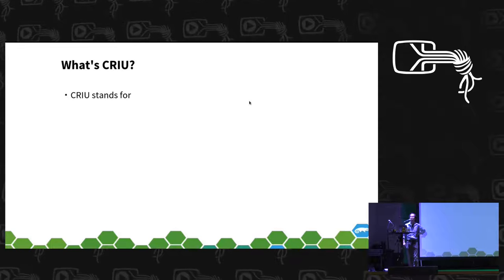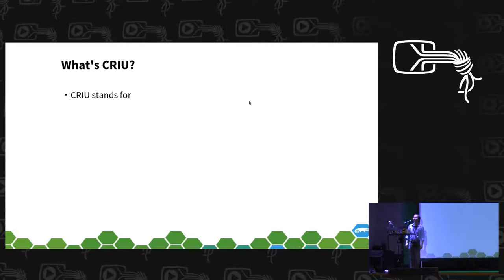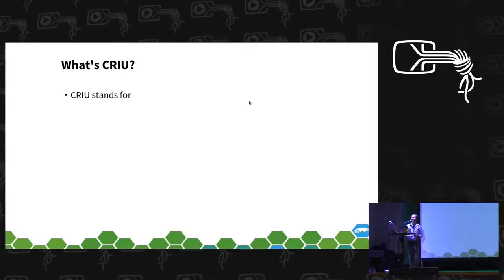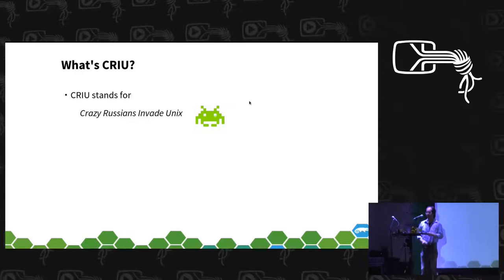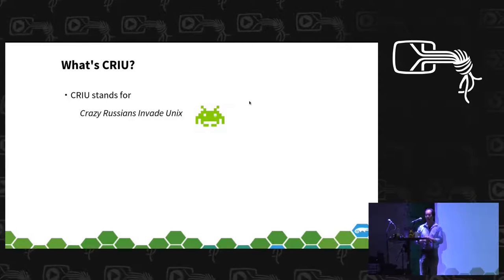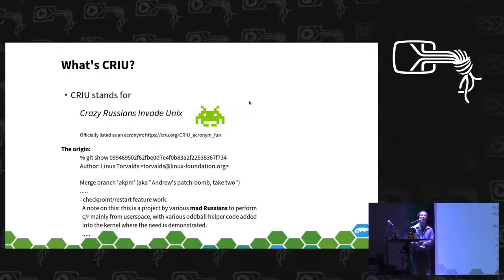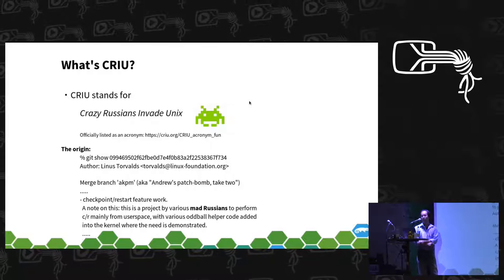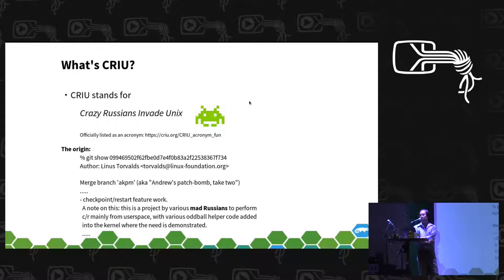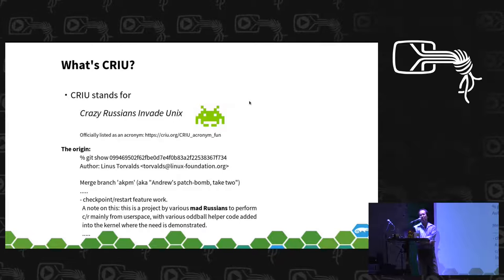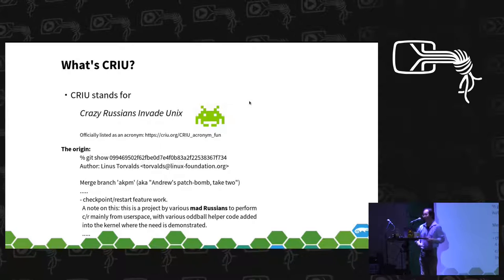So let's start from the very basic question: what is CRIU? Does anyone in this room have an idea? The upstream developers have a nice sense of humor — Russian humor — and that joke came from the Git commit message when the patches were merged into the Linux kernel, by Linus Torvalds and Andrew Morton, after all.